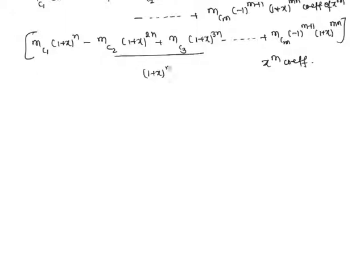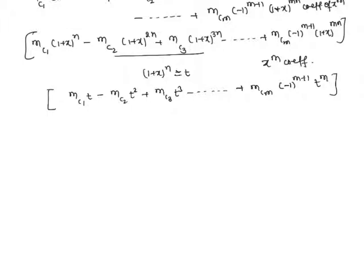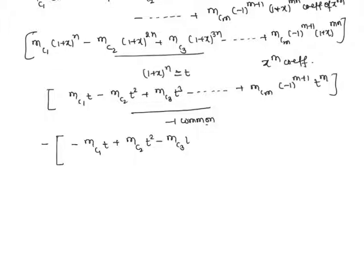To simplify, let t equal 1 plus x whole power n. The equation becomes mC1 · t minus mC2 · t squared plus mC3 · t cubed minus dot dot dot plus mCm · minus 1 power m plus 1 · t power m. Now take minus 1 common outside the bracket, giving minus of the series: mC1·t minus mC2·t squared plus mC3·t cubed minus dot dot dot.